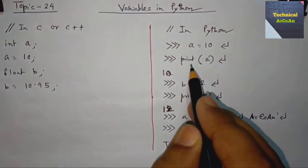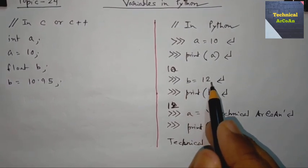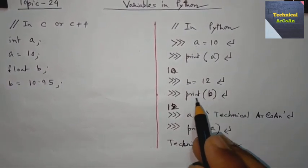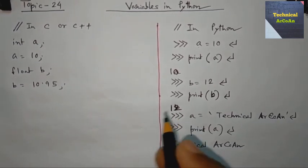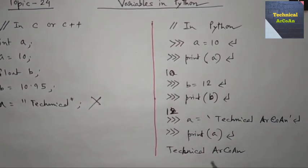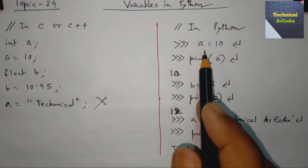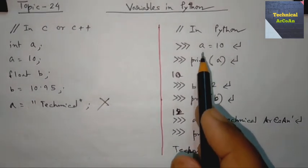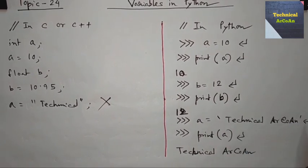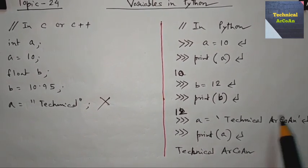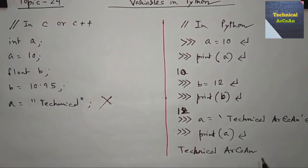But in Python, we define the value directly: a = 10, and if we print that value it prints 10. Similarly, b = 12 prints 12. In Python it is also possible to first define a = 10 as an integer, and then redefine a as a string — a = 'technical arc' — and printing a will output 'technical arc'.